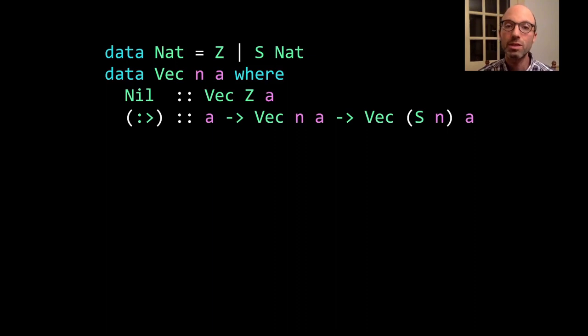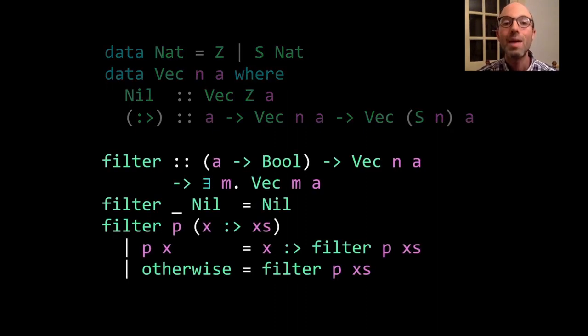Let's dive into the filter example because we can understand more about the specific design we're advocating here in this work. We start out with our usual unary natural numbers, as well as our usual length-indexed vectors. Nothing surprising here.